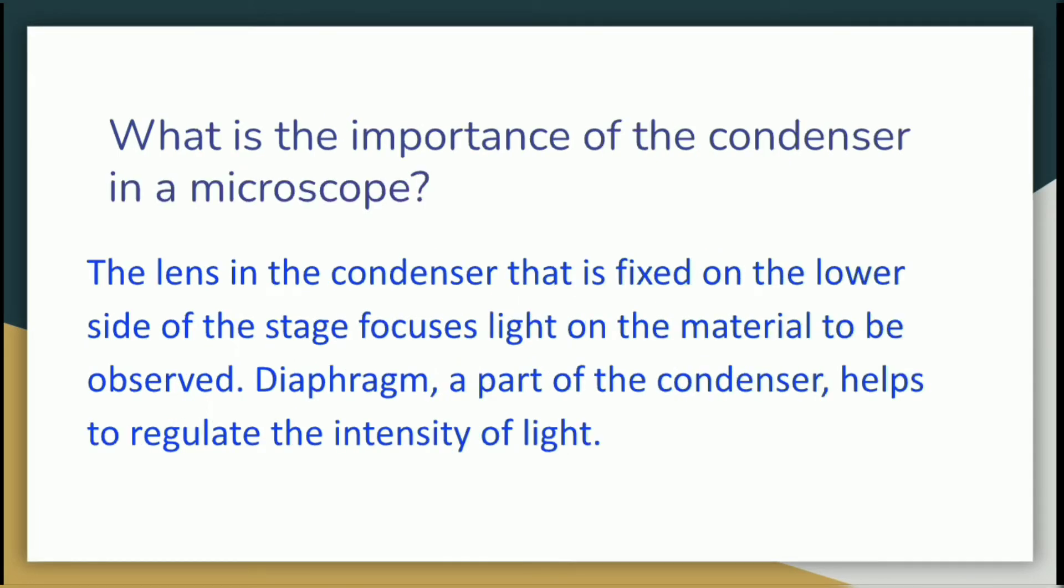What is the importance of the condenser in a microscope? The lens in the condenser that is fixed on the lower side of the stage focuses light on the material to be observed. Diaphragm, a part of the condenser, helps to regulate the intensity of light.